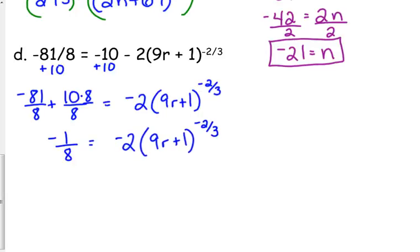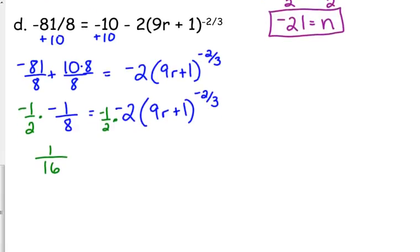Fractions are involved, so instead of dividing by negative 2, I'm going to multiply by negative 1 half. It's the exact same thing. Dividing by negative 2 is the exact same thing as multiplying by negative 1 half, because negative 1 half times negative 2 is positive 1. That makes it go away like it's supposed to. So that gives us positive 1 over 16. Multiplying fractions, you're straight over the top, straight across the box, and multiply.